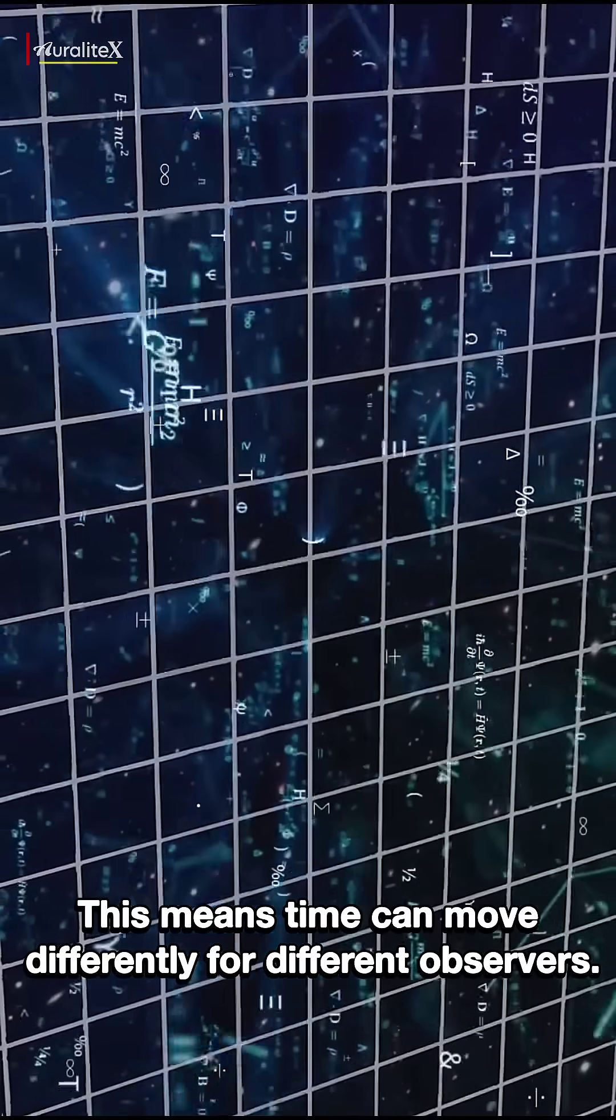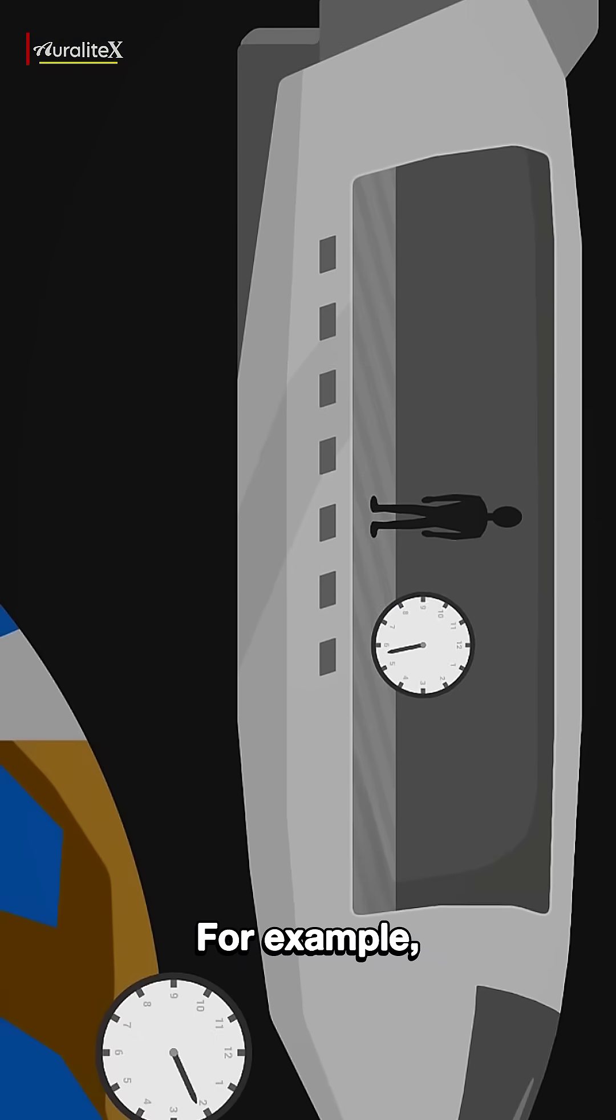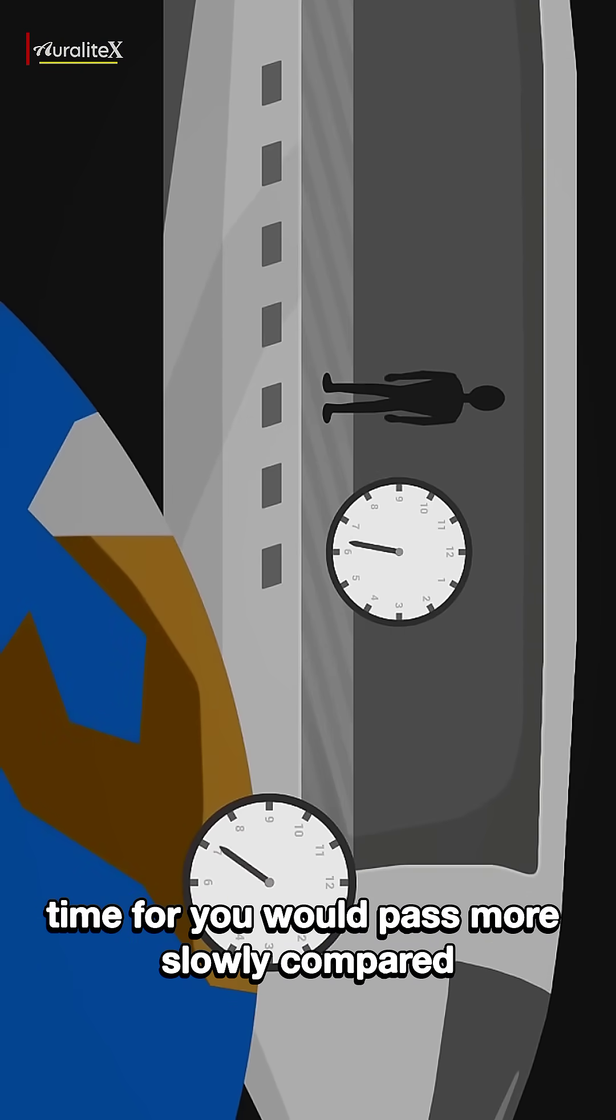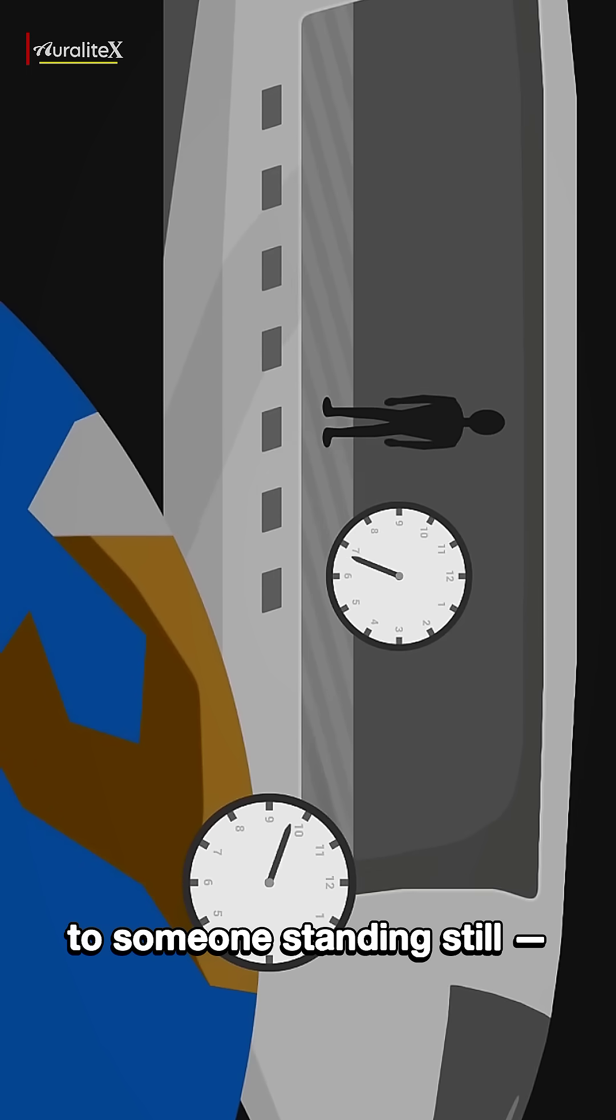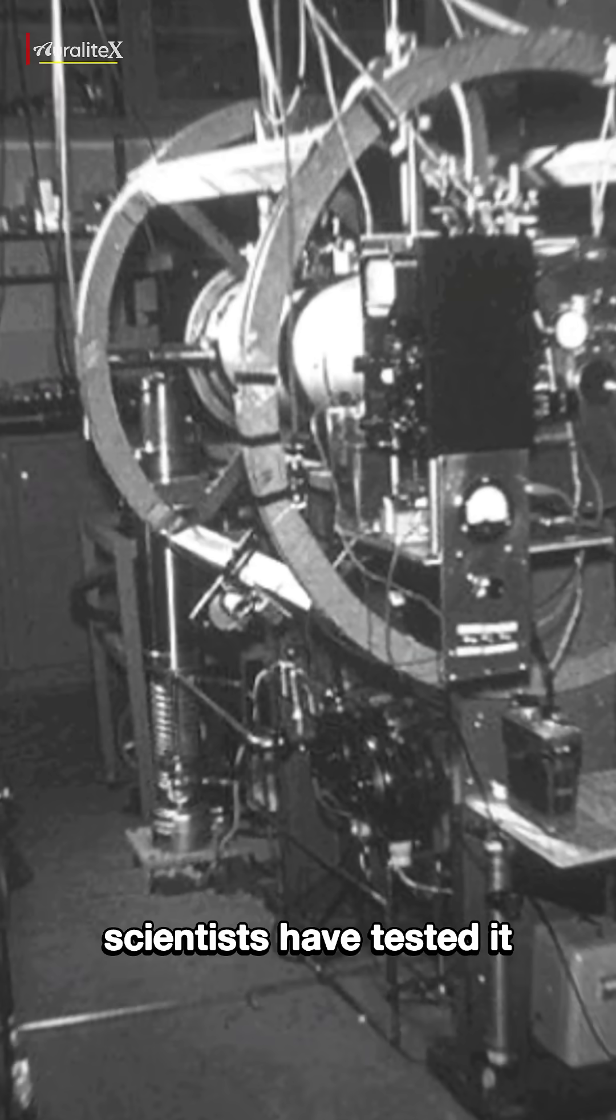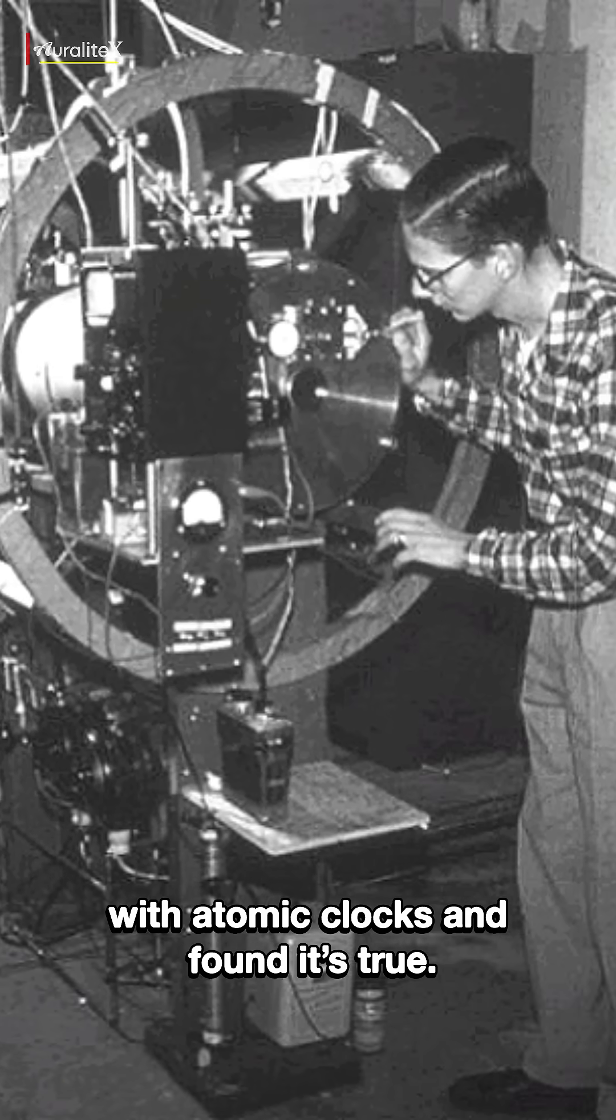This means time can move differently for different observers. For example, if you were traveling close to the speed of light, time for you would pass more slowly compared to someone standing still. This is called time dilation. It's not just theory—scientists have tested it with atomic clocks and found it's true.